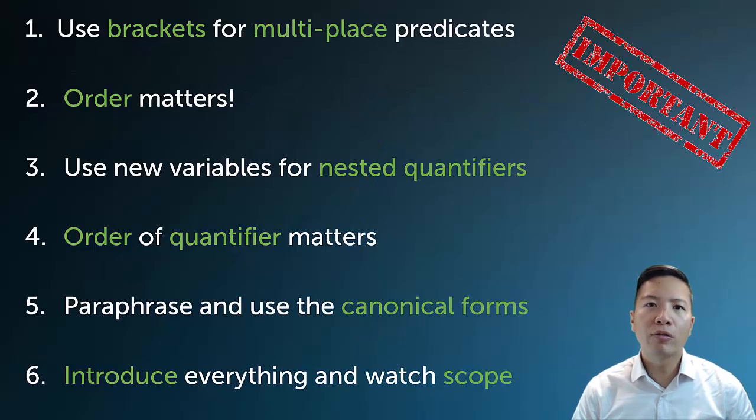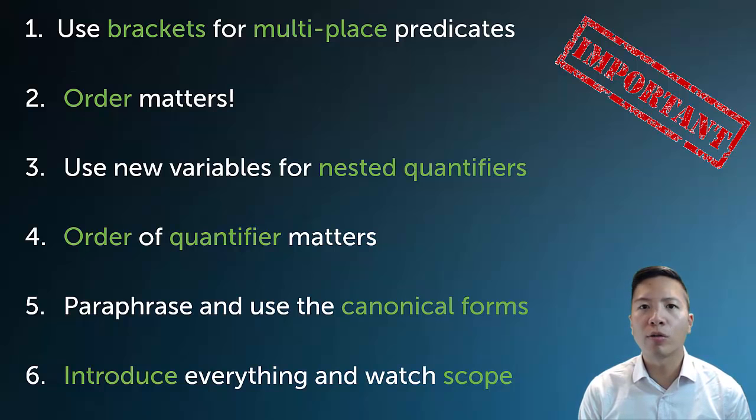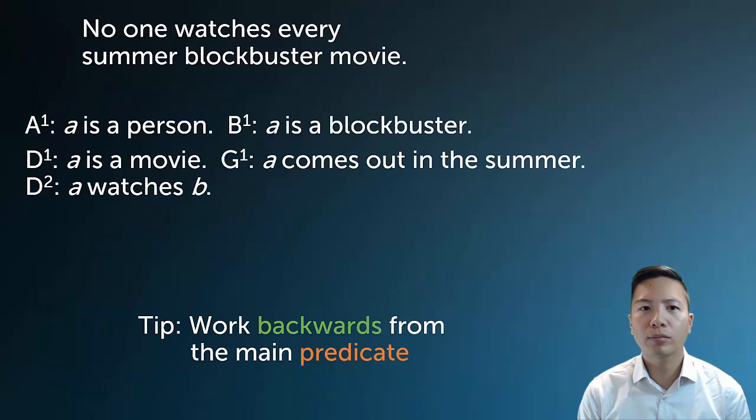So a couple other important things to add on to our list of tips here is that, remember, the paraphrasing and the canonical form are still really important for multi-place. And the other thing, which we're going to focus on in the subsequent examples, is that we always want to introduce everything first before we say the big complicated relation, and we need to be careful of the scope.